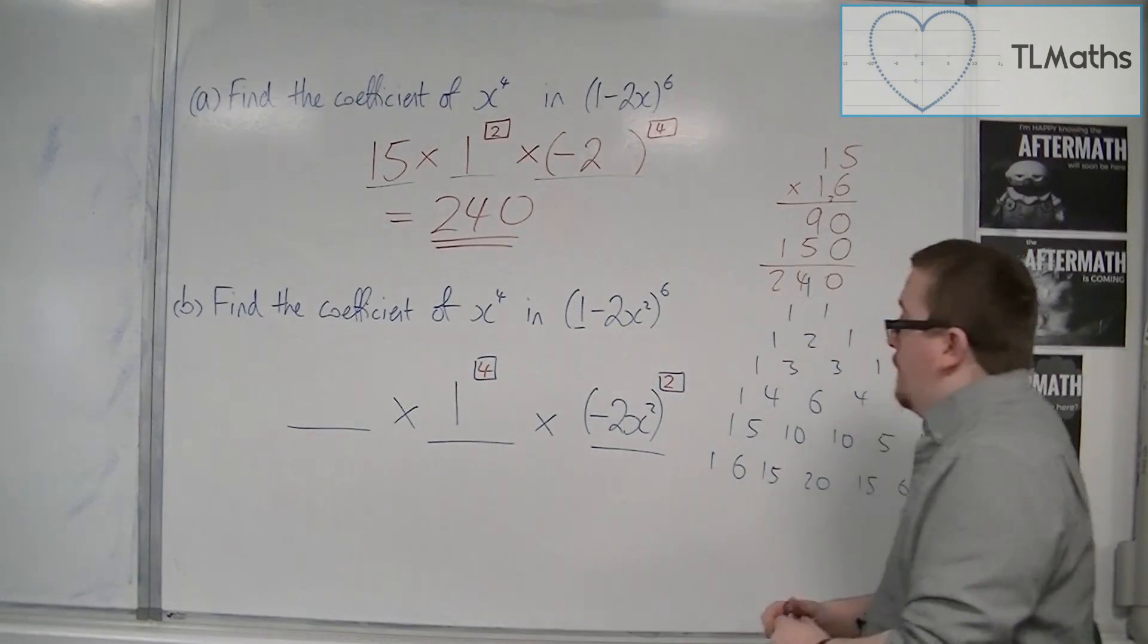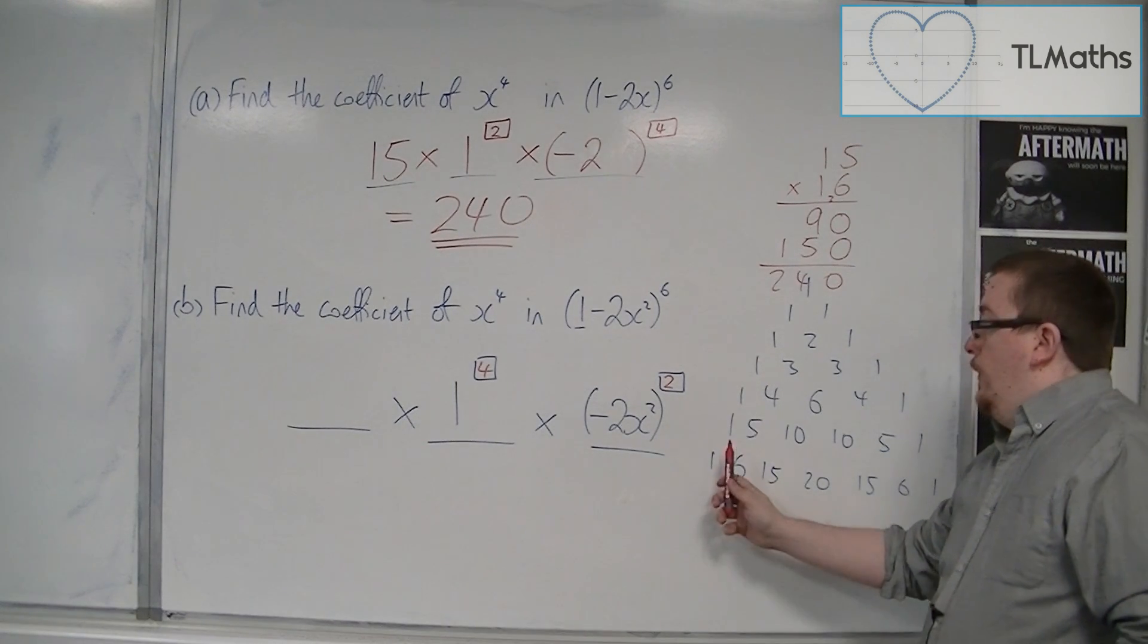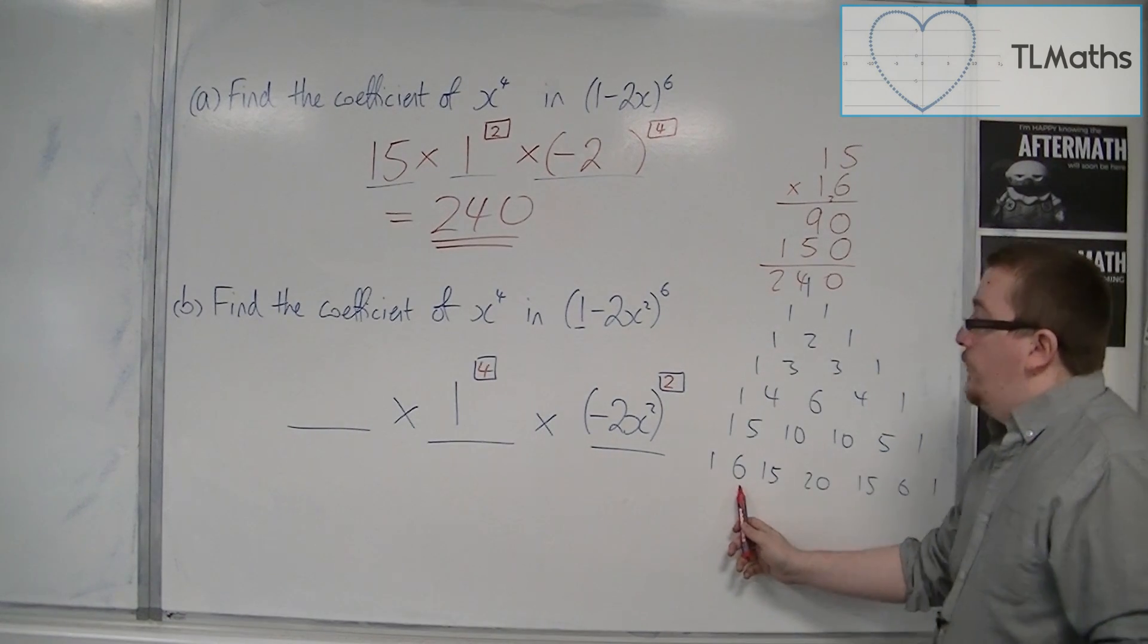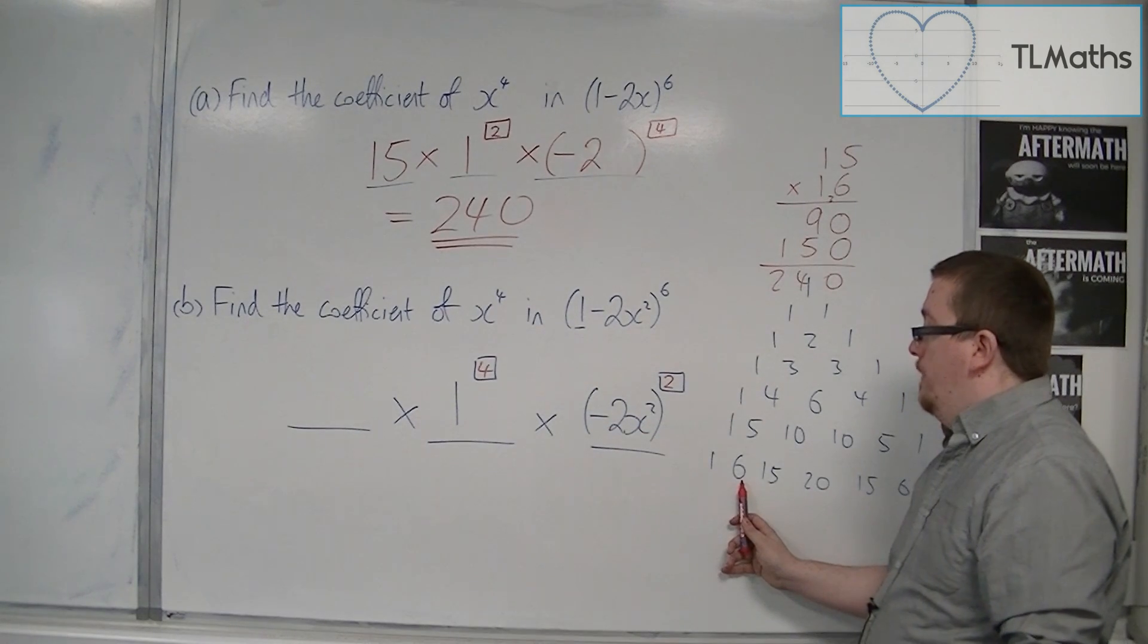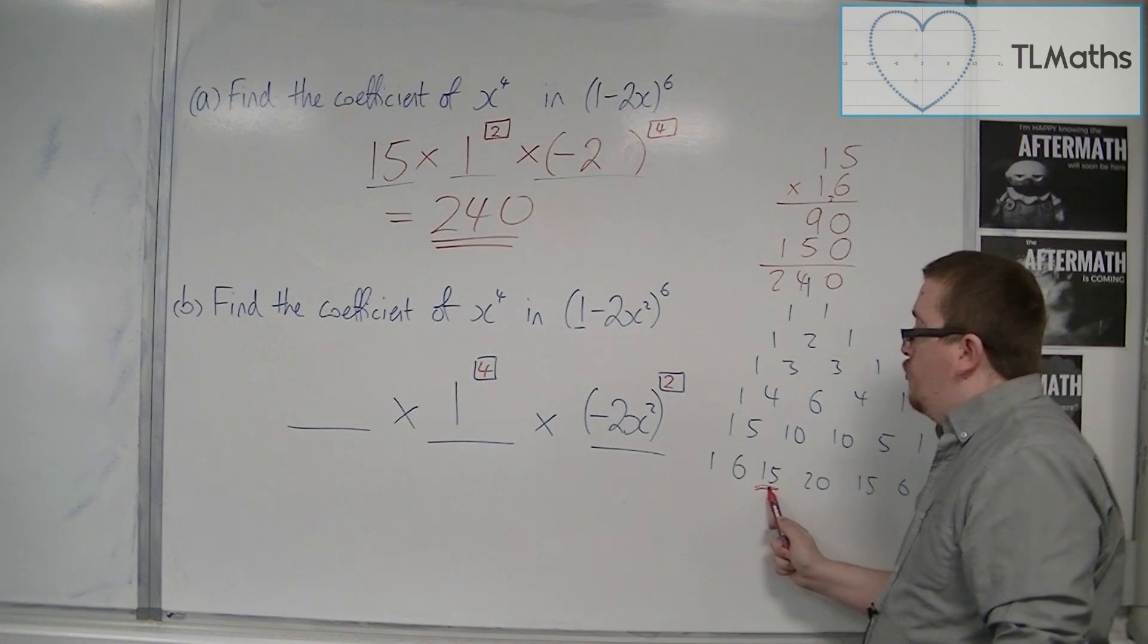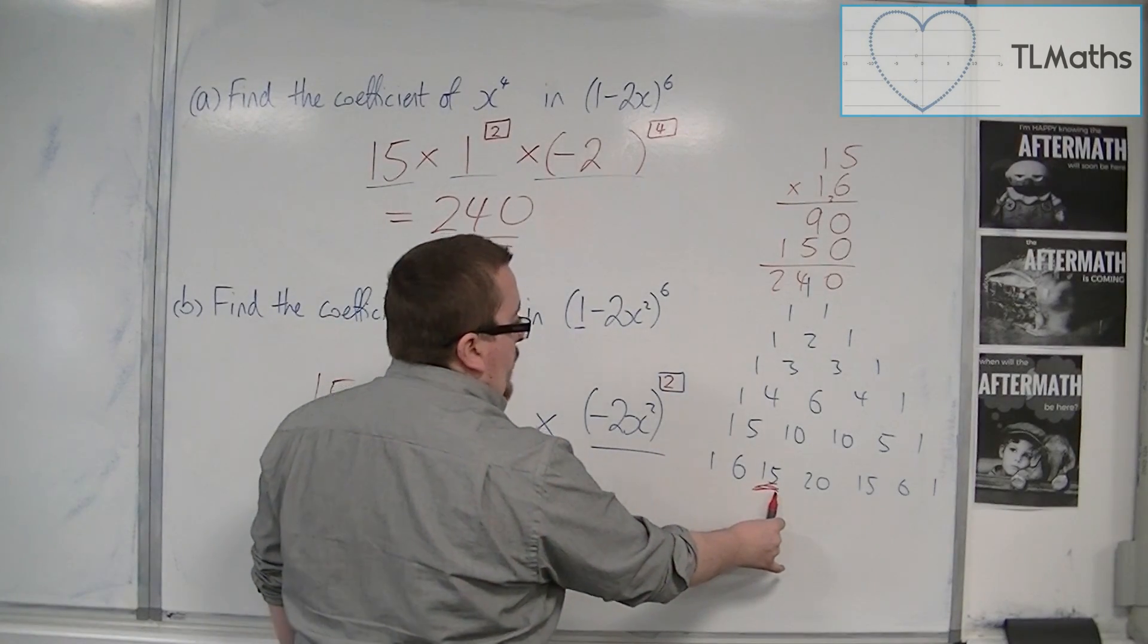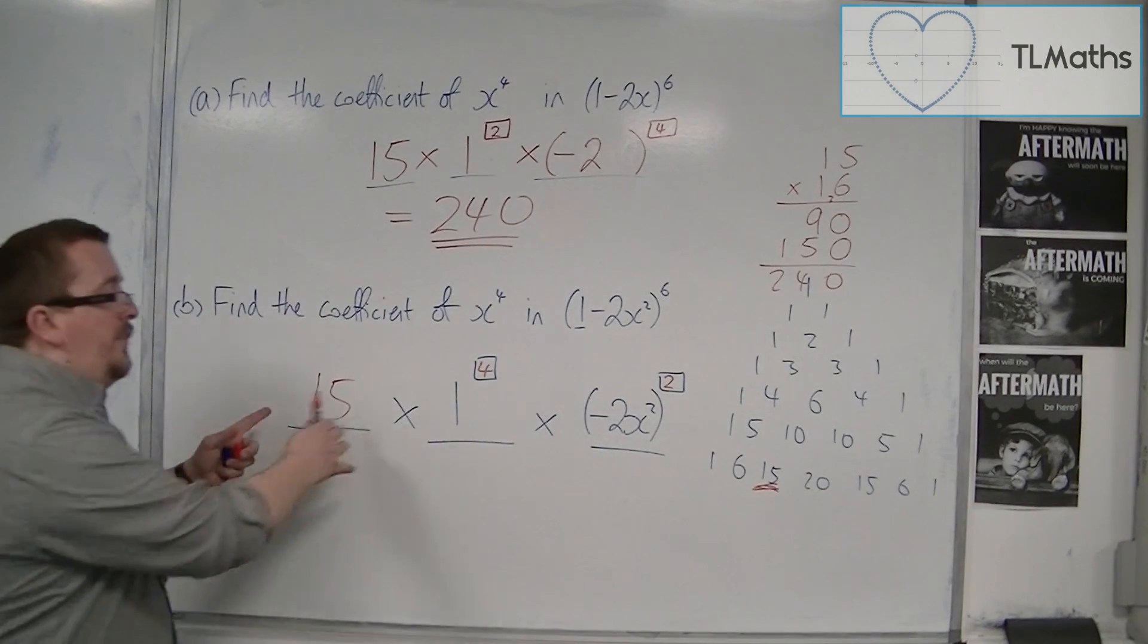So if we think about this logically, what we're going to have is 1 to the power of 6 plus 6 times 1 to the power of 5 times minus 2x squared to the power of 1. And so it is this term that will get me the correct one, because it will be 15 times 1 to the 4 times minus 2x squared squared. So this is what I want.